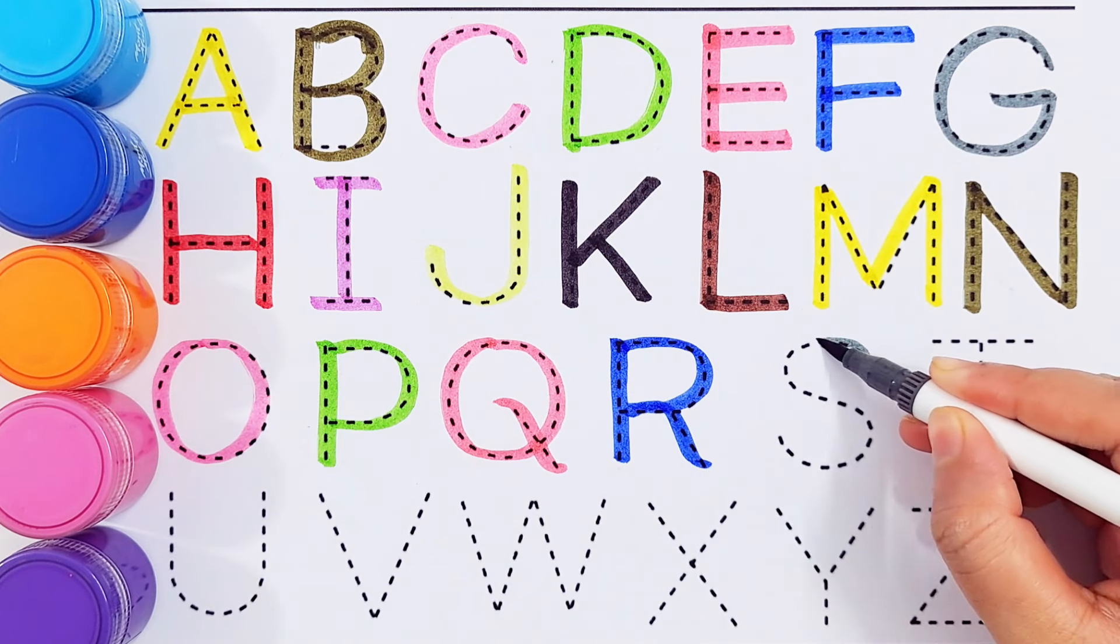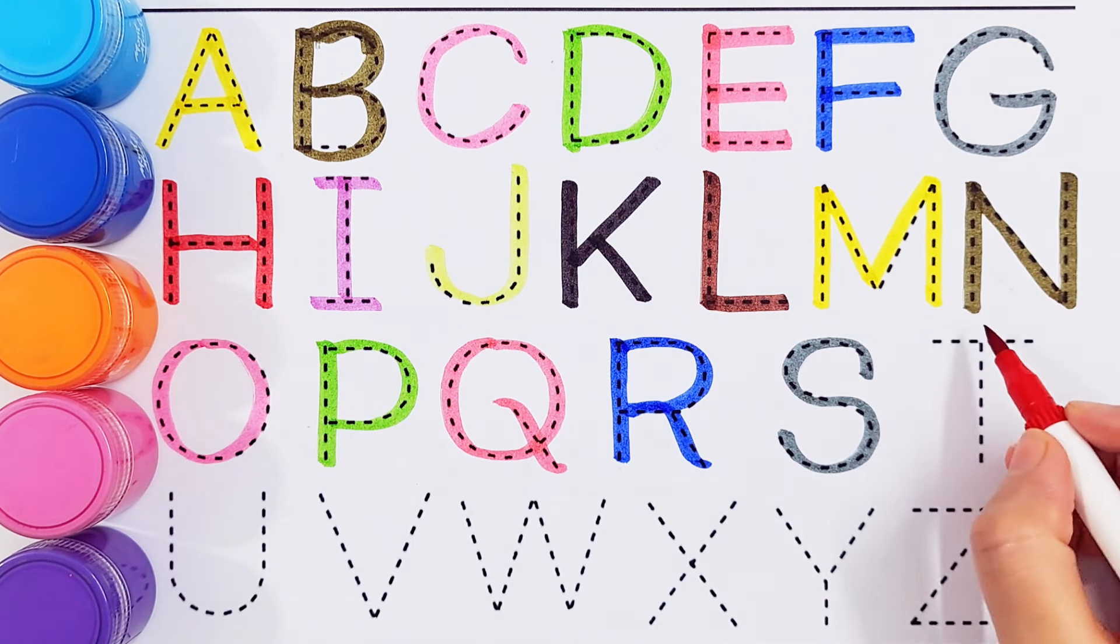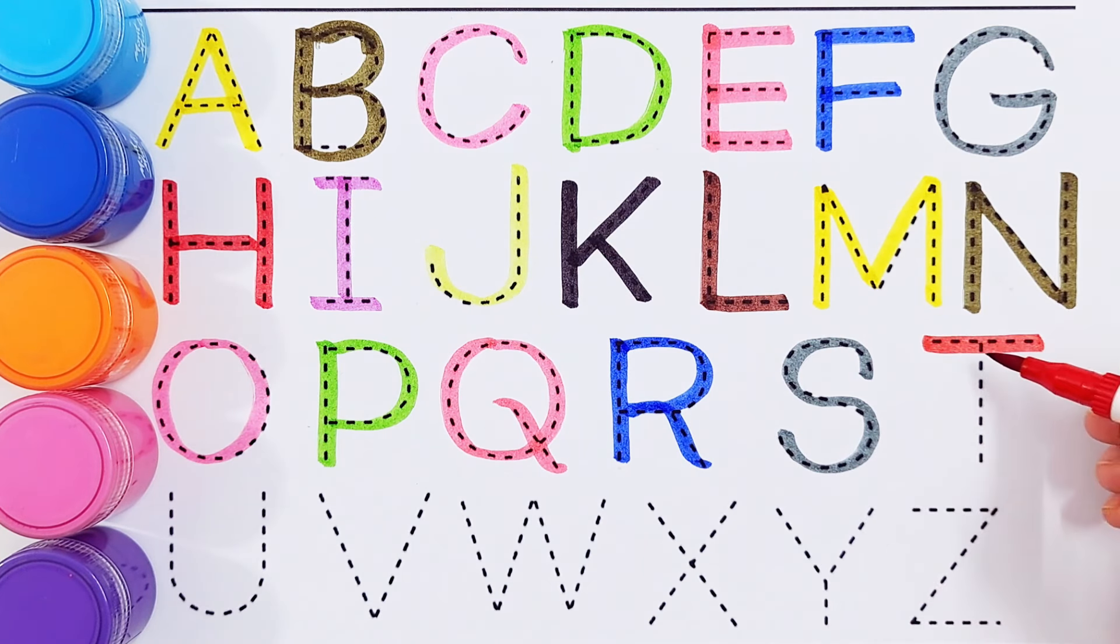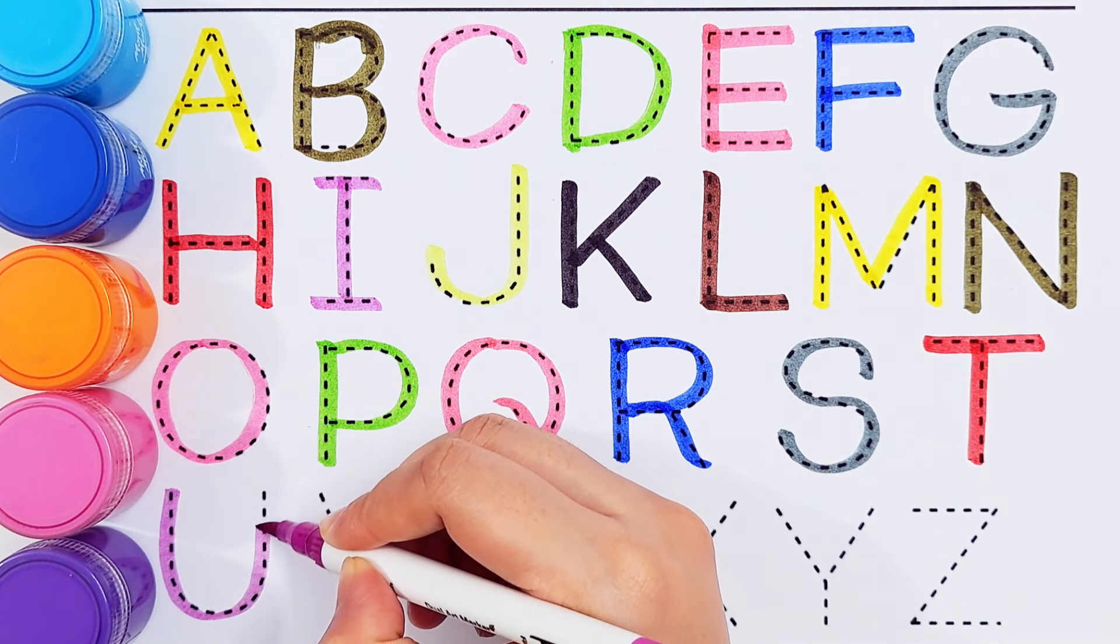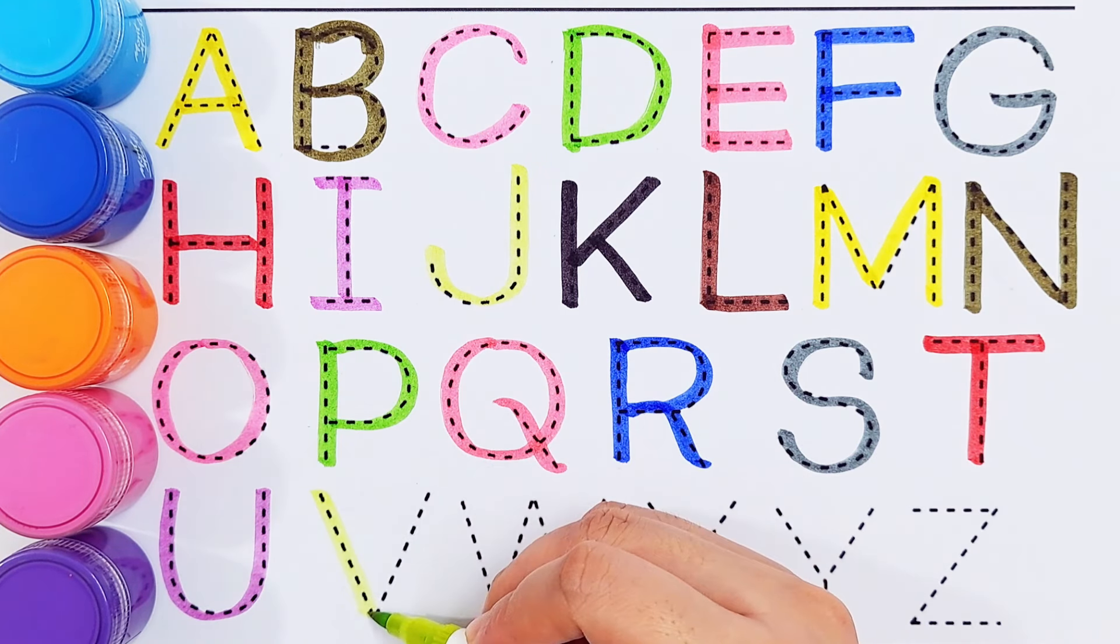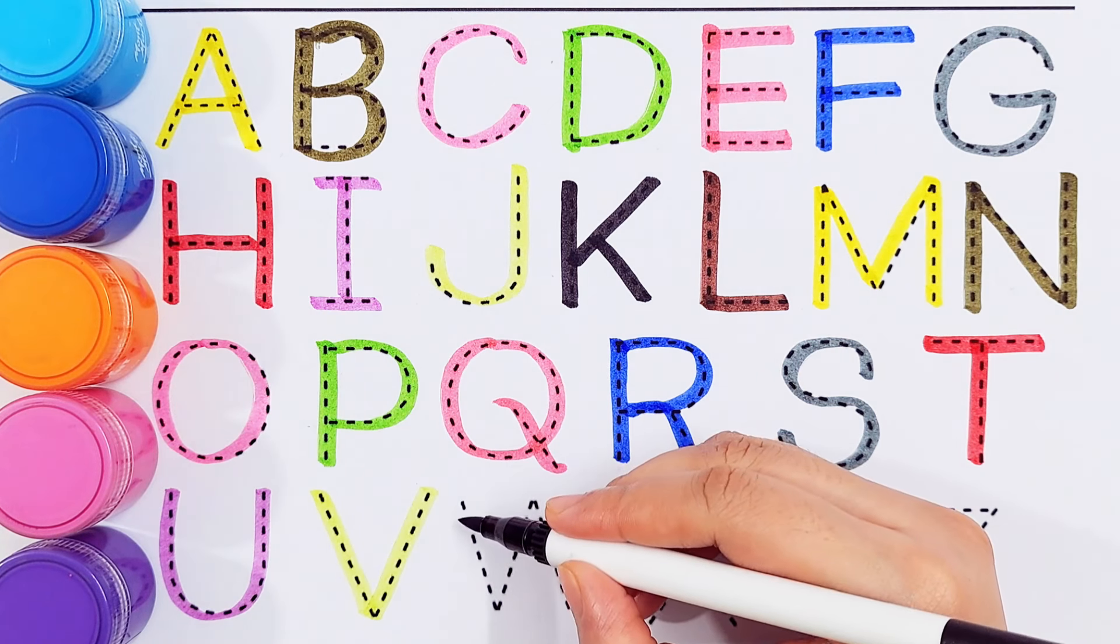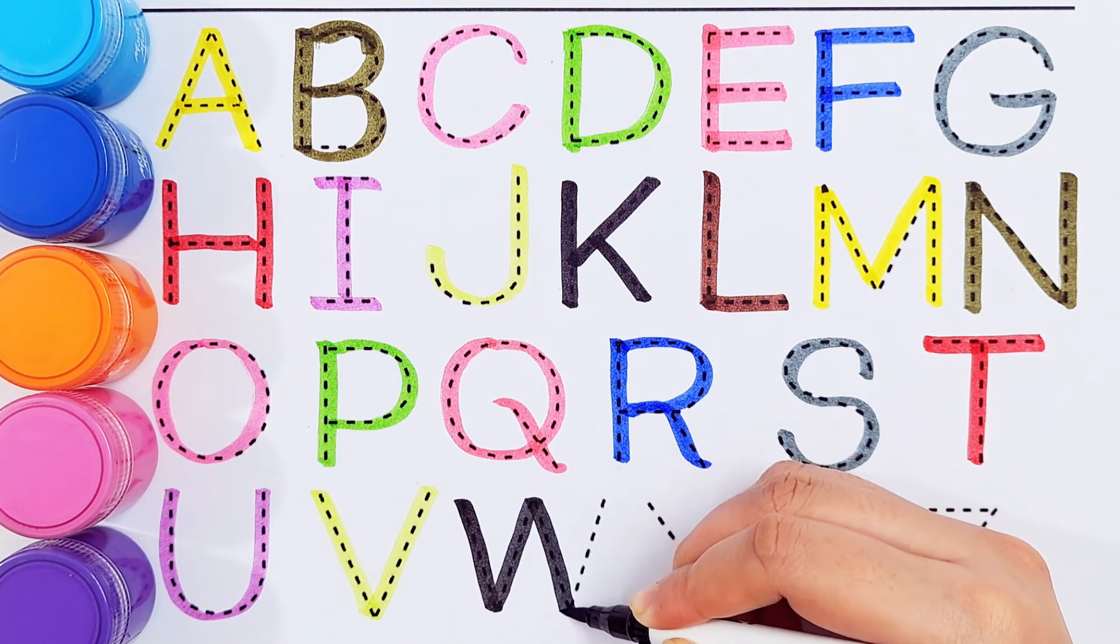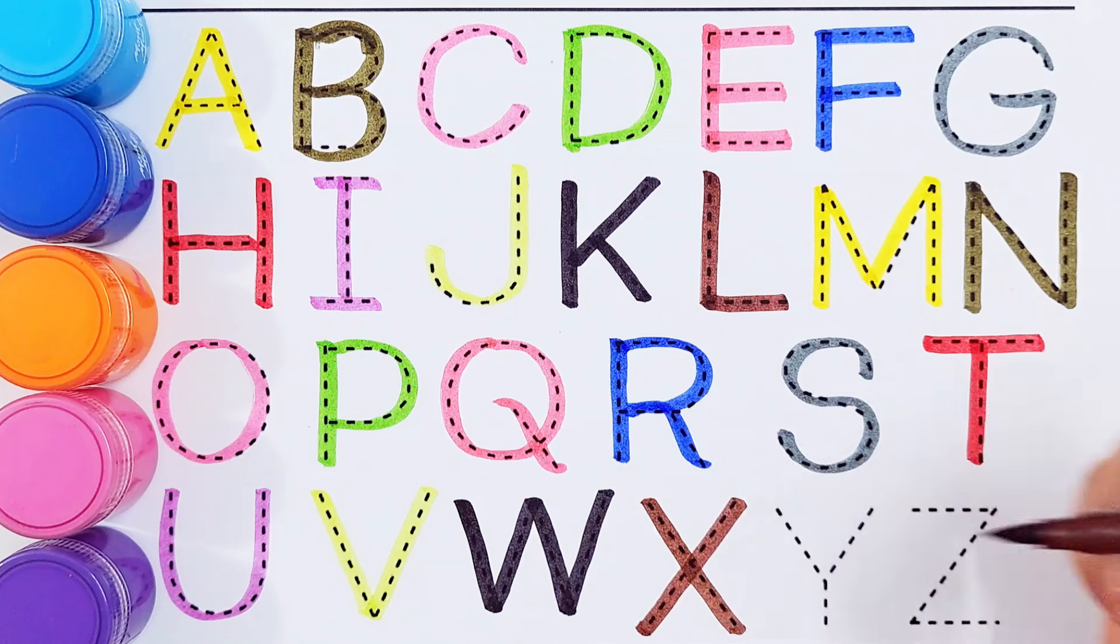S, S for sunflower. T, T for torch. U, U for umbrella. V, V for vest. W, W for window. X, X for x-ray.